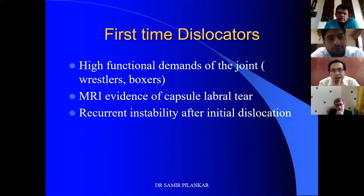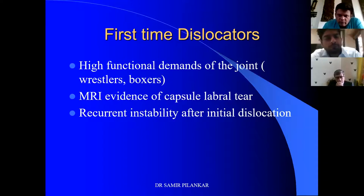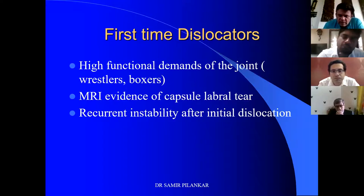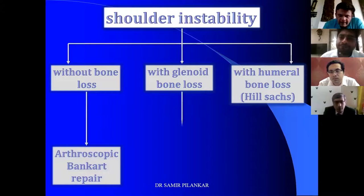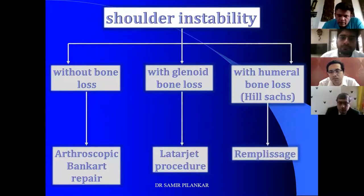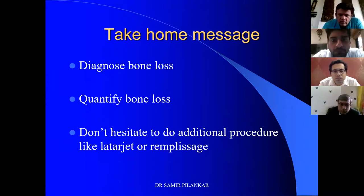First-time dislocators are a very special subset. Surgery is recommended for a select group: high functional demand patients like wrestlers or boxers, or if MRI shows evidence of a large capsulolabral tear, or if post-reduction there is recurrent instability — these patients would require a primary Bankart repair. Take-home message: follow this simple algorithm. Whenever in doubt, first diagnose and quantify the bone loss. Whenever in doubt, don't hesitate to do additional procedures like Latarjet or Remplissage. Only then can we ensure good results for all our patients.